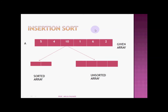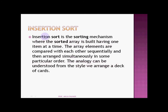Let's learn insertion sort. Let us consider this is array A having six elements. We virtually consider that the first element already exists in a sorted array and the rest is the unsorted array. Now pick from unsorted one by one and put into sorted at the appropriate place. It is a sorting mechanism where the sorted array is built one item at a time. The array elements are compared sequentially and arranged in order — essentially the number line from 0 to 100. The analogy can be understood from the style we arrange a deck of cards.